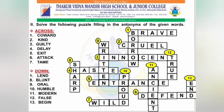Now children, let's solve the following puzzle filling in the antonyms of the given words. Across means placing the words horizontally; down means placing them vertically. First across: coward — opposite is brave. Second across: kind — opposite is cruel. Third across: guilty — opposite is innocent. Fourth across: delay — opposite is haste. Fifth across: exit — opposite is entrance.